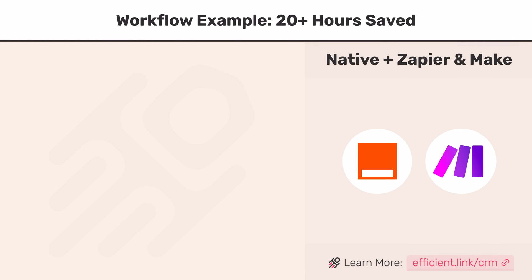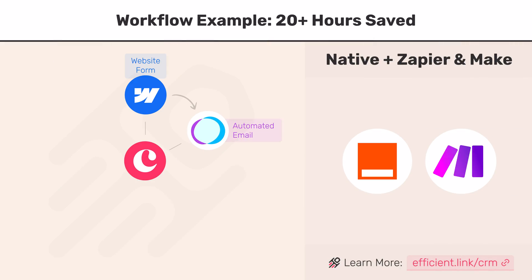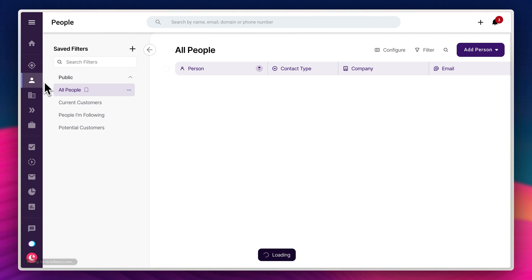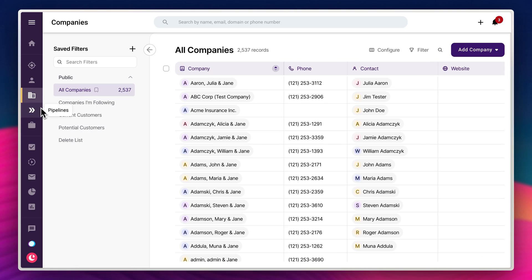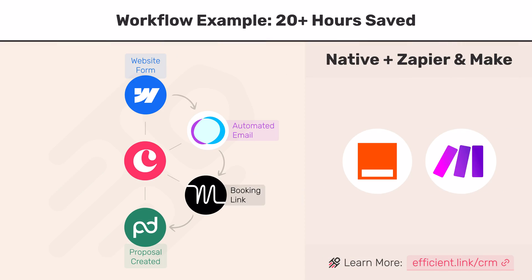Let's take a home services company as an example. They have a website and somebody fills out a form — that form is integrated with Copper, and all of their data appears in the lead section so the team knows to follow up. Automated emails may also go out to follow up with them. From there, they might automatically get sent a scheduling link to book a home visit. Your team goes out, assesses if they're a qualified lead, and if they are, they get converted into a person, perhaps a company and an opportunity. You then take them through your sales process, and perhaps one stage is to create a proposal. If you're using PandaDoc integrated with Copper, you can automatically pull contact details straight from Copper into PandaDoc. We've seen teams save hours when using PandaDoc and Copper together.